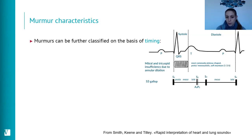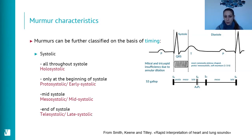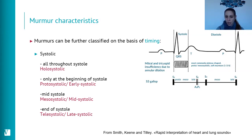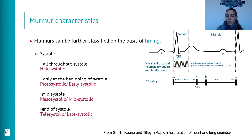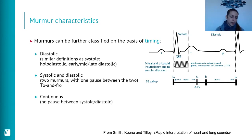The timing of a murmur — systolic or diastolic — is important. For systolic murmurs, we should note their duration. If audible throughout all of systole, it is holosystolic (or pan-systolic when S1 and S2 cannot be distinguished). Murmurs heard only during part of systole may be protosystolic, mid-systolic, or late-systolic. The same terminology applies to diastolic murmurs.